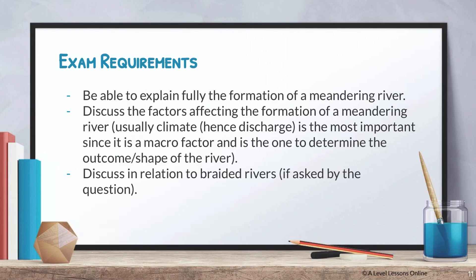For exam requirements: you need to explain fully the formation of a meandering river through the four stages, and discuss the factors affecting its formation. Climate and discharge are the most important factors, as they determine whether the river becomes a meandering river, a braided river, or just a normal stream. Also compare braided and meandering rivers — braided requires seasonal climate, while meandering requires a slow, gradual, long period of time to form pools, riffles, point bars, and river cliffs.